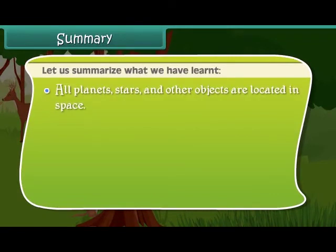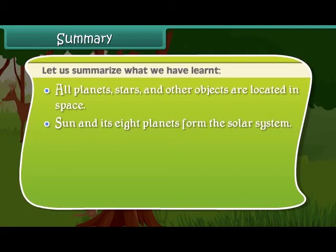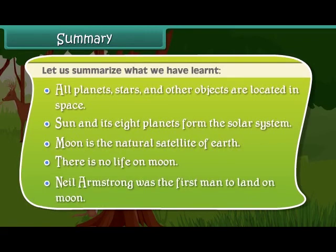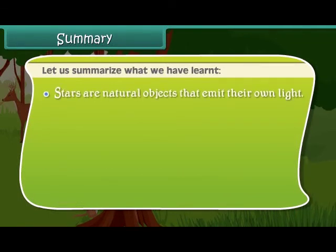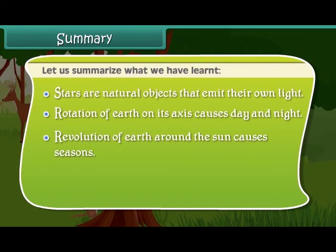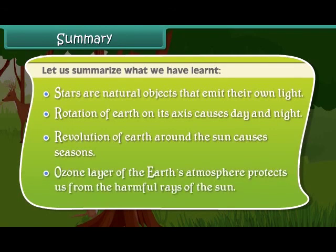Let us summarize what we have learned. All planets, stars and other objects are located in space. The Sun and its eight planets form the solar system. The Moon is the natural satellite of Earth. There is no life on the Moon. Neil Armstrong was the first man to land on the Moon. Stars are natural objects that emit their own light. Rotation of Earth on its axis causes day and night. Revolution of Earth around the Sun causes seasons. The ozone layer of Earth's atmosphere protects us from the harmful rays of the Sun.